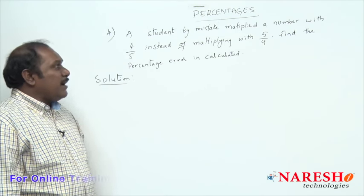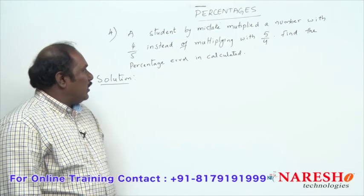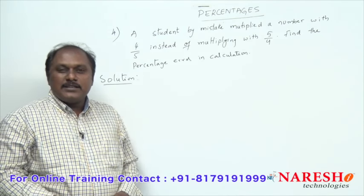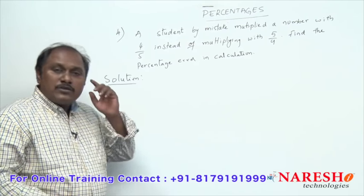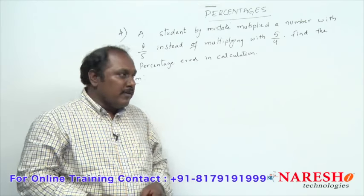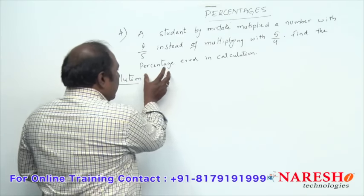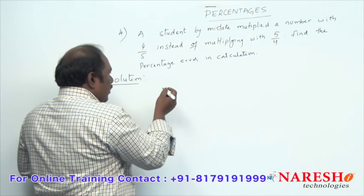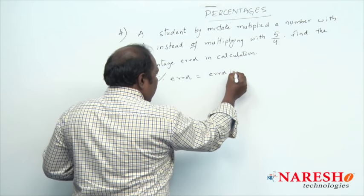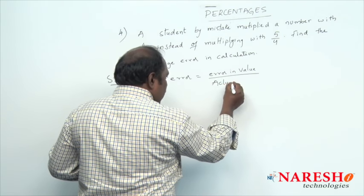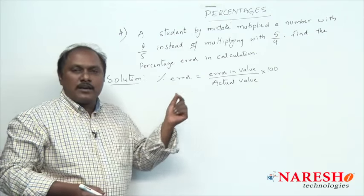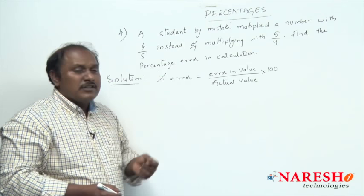A student by mistake multiplied a number with 4/5 instead of multiplying with 5/4. Find the percentage error in the calculation. To solve this problem there are different ways. One way is to use the formula for percentage error, which is: error in value divided by actual value, multiplied by 100.